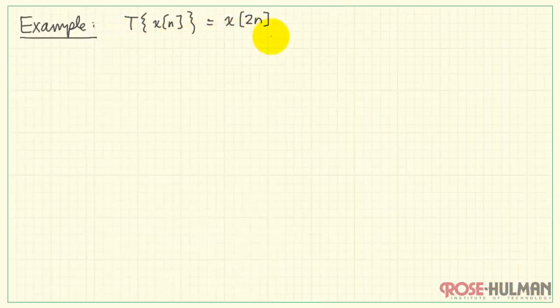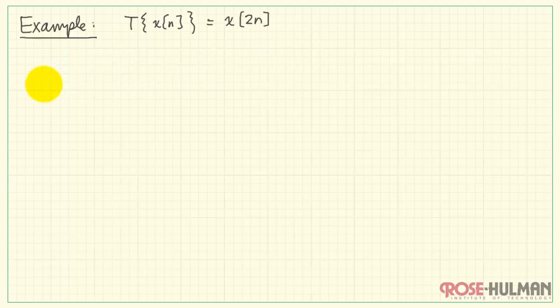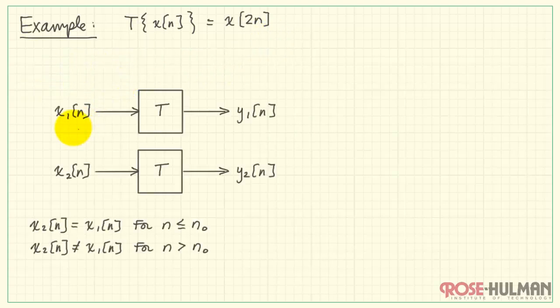Let's try this out on a second example. In this case, the system operator says X of 2n. Y1 is X1 of 2n and X2, or Y2, rather, is X2 of 2n.